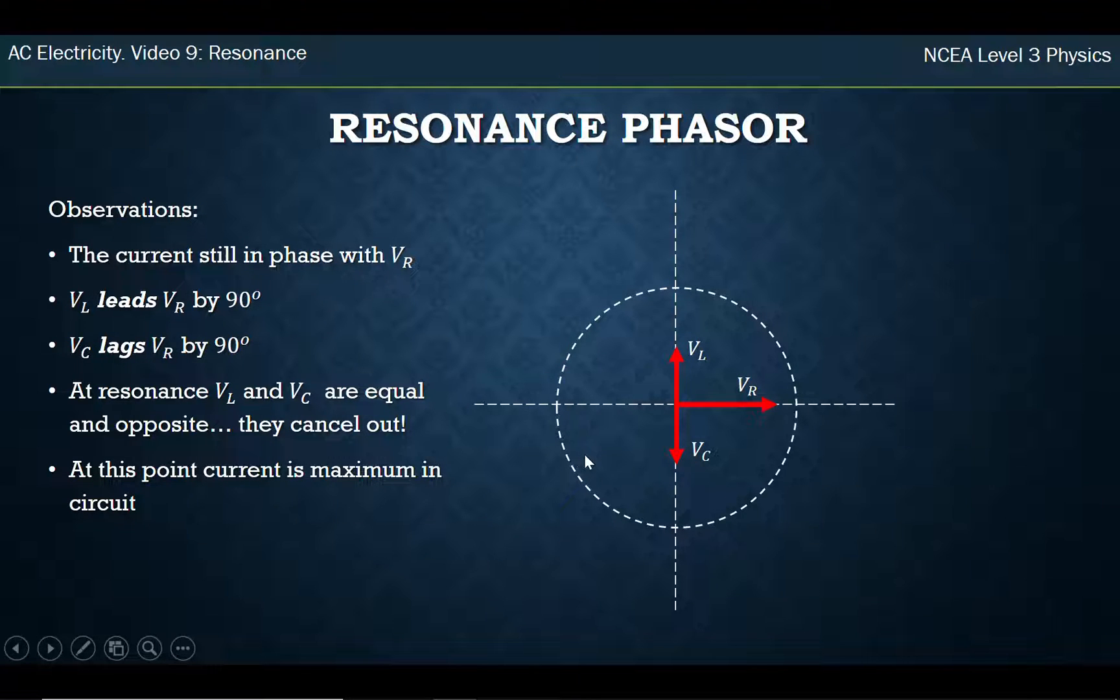So what does that look like in the phasor diagram? Well, these two arrows for inductor and capacitor are equal. They're always in the opposite directions, but now they're equal. So they fully cancel out.